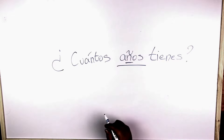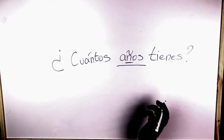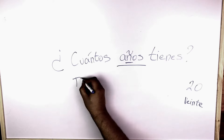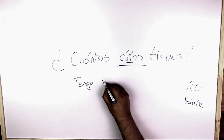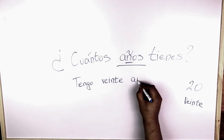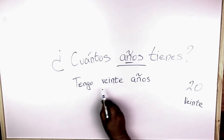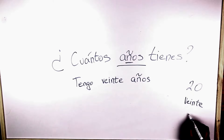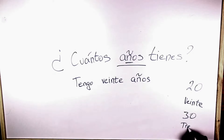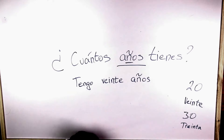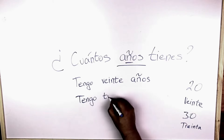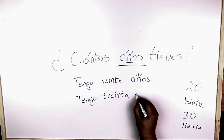So, ¿Cuántos años tienes? means how old are you. And you would respond — let's say that you are 20 years old, that is veinte. You would say, Tengo veinte años. Tengo veinte años — that means I'm 20 years old. Now, if you are 30, that is treinta. This is why it's very important that you watch our video on numbers. So, let's say that you are 30 years old, you would say, Tengo treinta años.